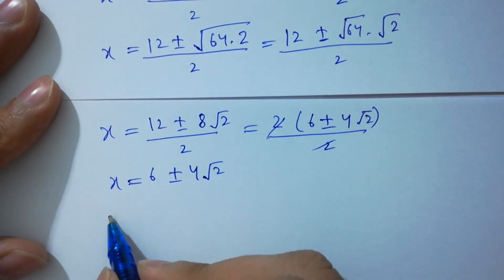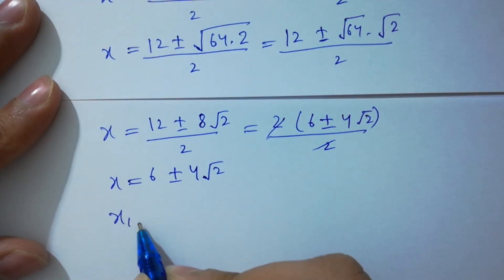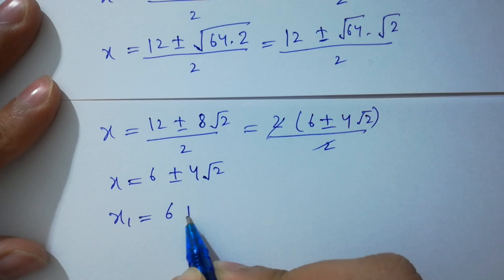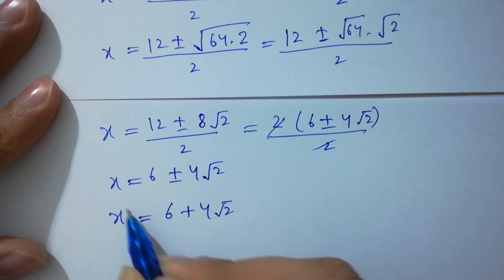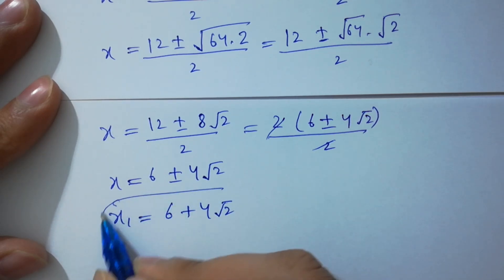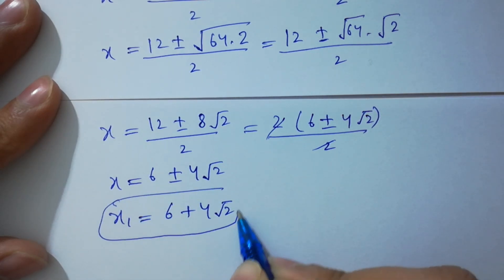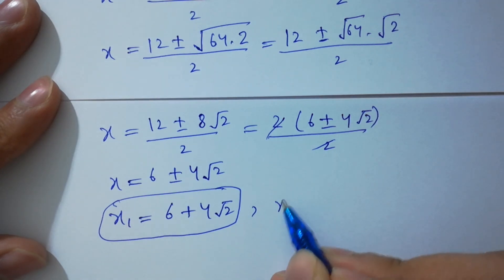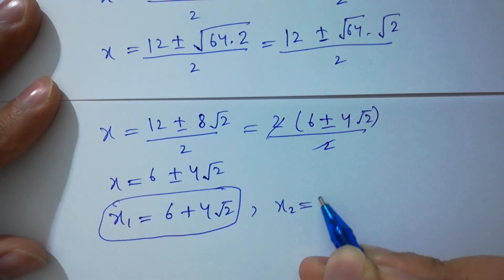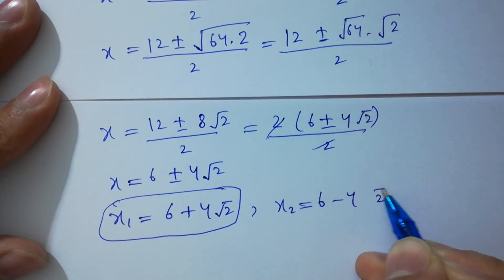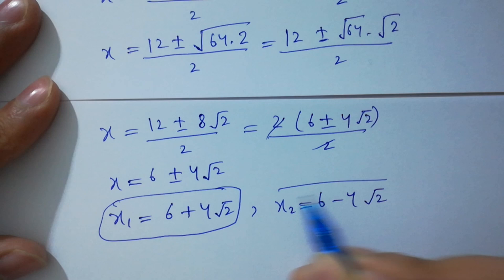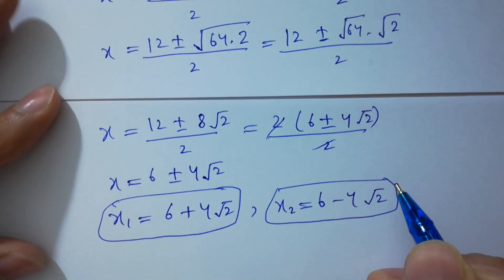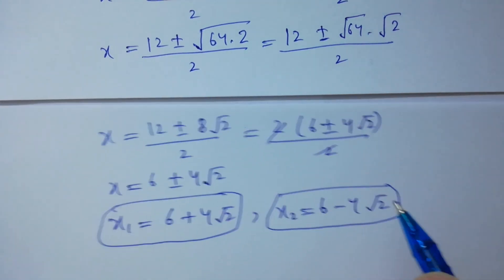We get x₁ equals 6 plus 4 square root of 2, and x₂ equals 6 minus 4 square root of 2, which are the values of x.